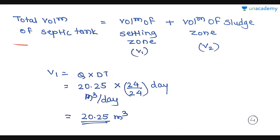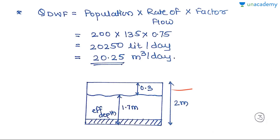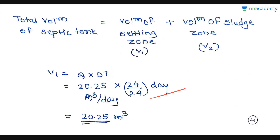As given in the design parameters for septic tank, total volume = volume of settling zone (V1) + volume of sludge zone (V2). V1 = Q × DT. Q is the dry weather flow = 20.25 m³/day. Detention time is 24 hours, converted to days: 24/24 = 1 day. So V1 = 20.25 × 1 = 20.25 m³.